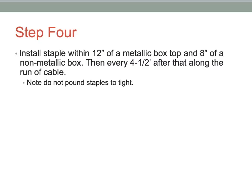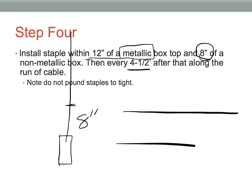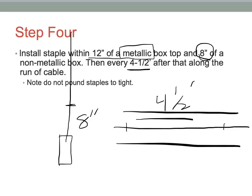For Step 4, note it says within 12 inches for a metallic box, but very rarely do we use metallic boxes with NM cable, so we're going to focus on the 8-inch requirement for non-metallic boxes. So if our box is here and we're running our cable up, we put our staple within 8 inches of the box, and then we go every 4.5 feet after that along the run of the cable — whether running vertically up a stud or across the face of a 2x10 or 2x8. Mr. Morse is going to demonstrate this here shortly.